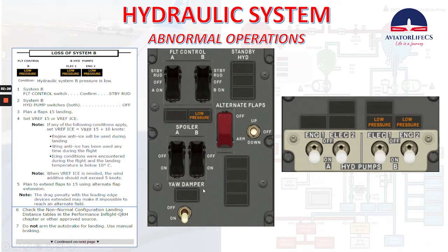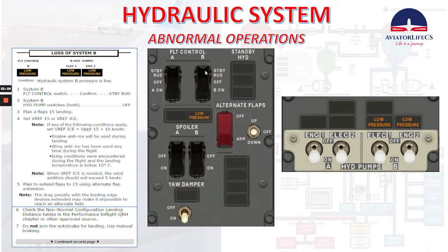Now if we talk about the loss of system B, this is where we are supposed to see the low pressure light in flight control B, the low pressure light for ELEC 1 and engine 2, and the B hydraulic pumps. The condition is hydraulic system B pressure is low. We put the system B flight control switch — confirm and standby rudder. System B hydraulic pump switches — both off.